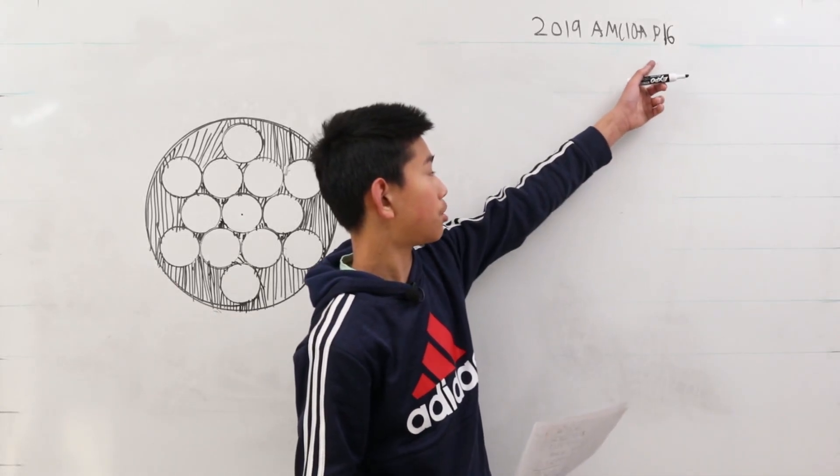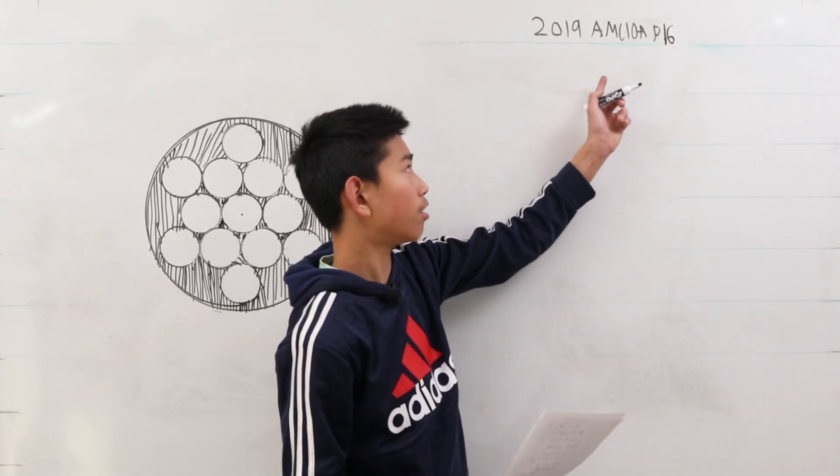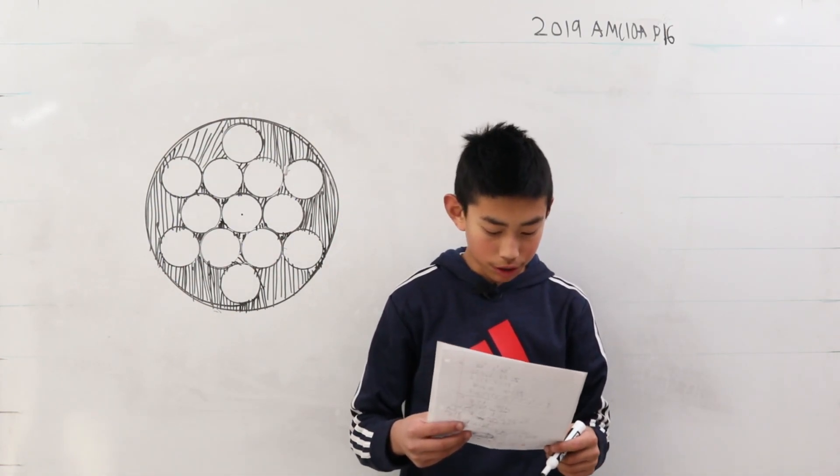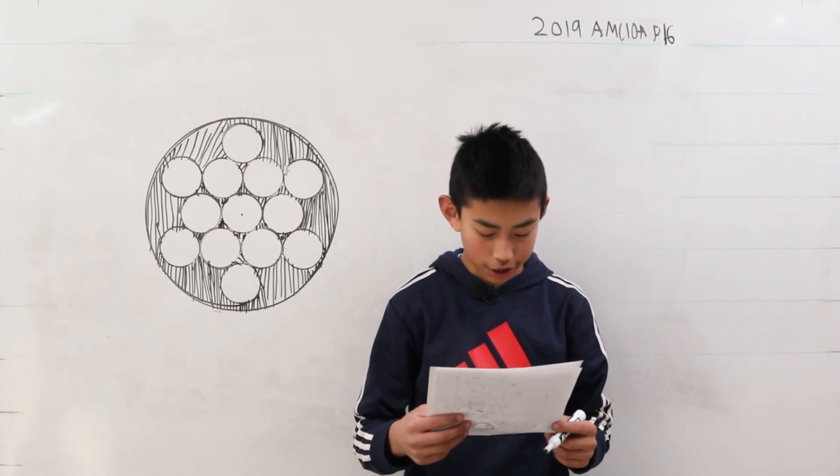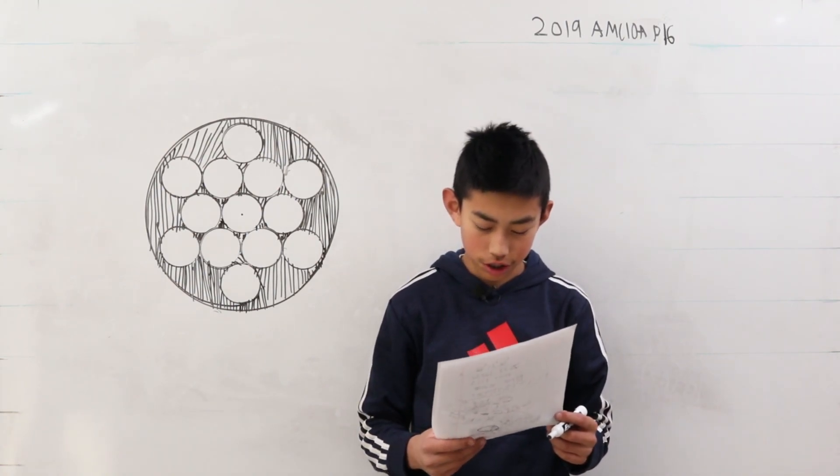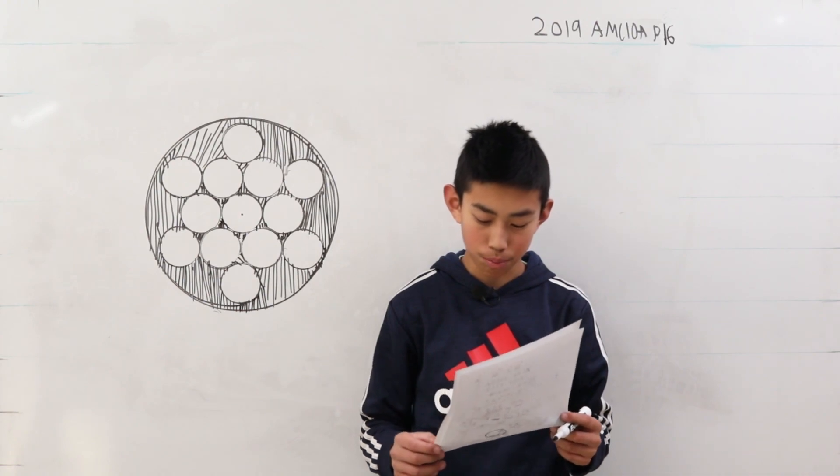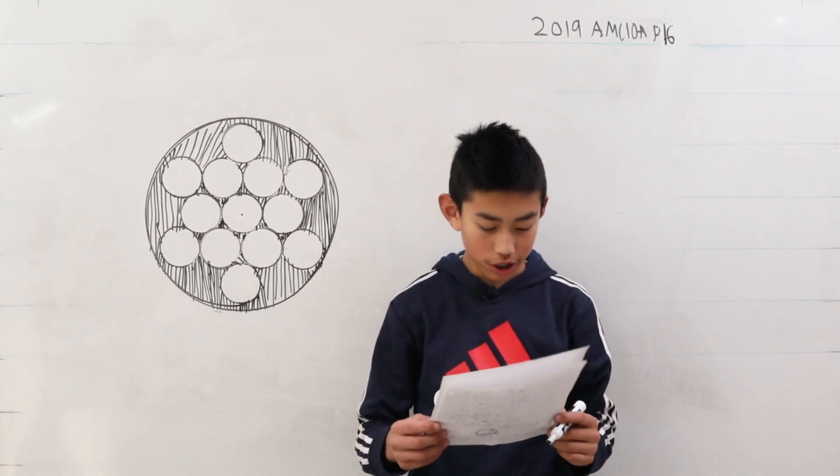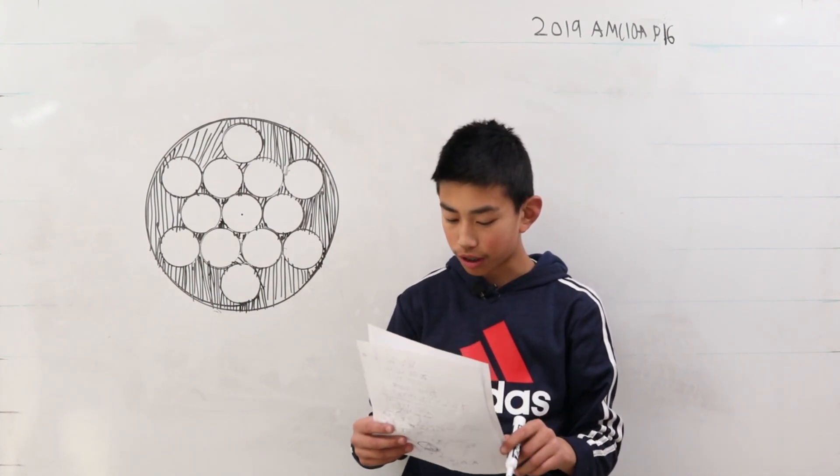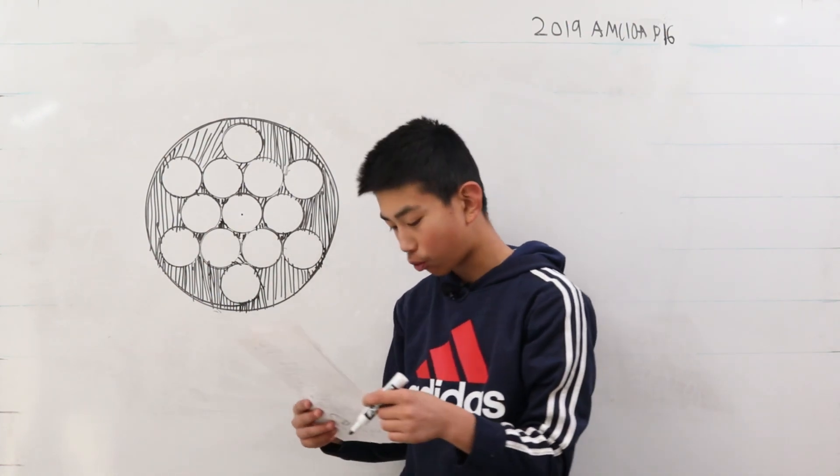We're solving problem 16 from the AMC 10A from 2019. The figure below shows circles of radius 1 within a larger circle. All the intersections occur at points of tangency. What is the area of the region shaded in the figure inside the larger circle, but outside all the circles of radii 1?